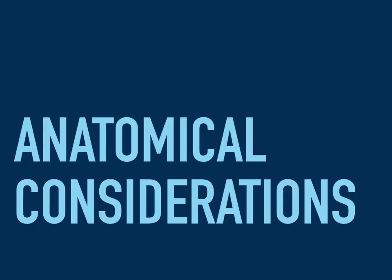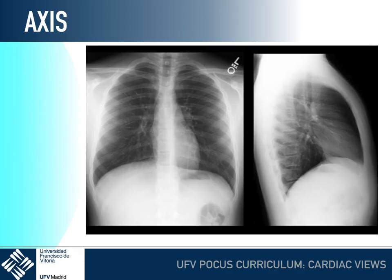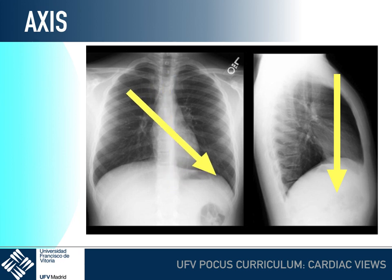We need to consider some anatomical aspects before obtaining adequate heart views using our ultrasound machine. First of all, it's the normal axis of the heart. The heart is placed in three dimensions inside the chest, and from base to apex it is superior to inferior, right to left, and back to front. This is the position in three dimensions of the heart.